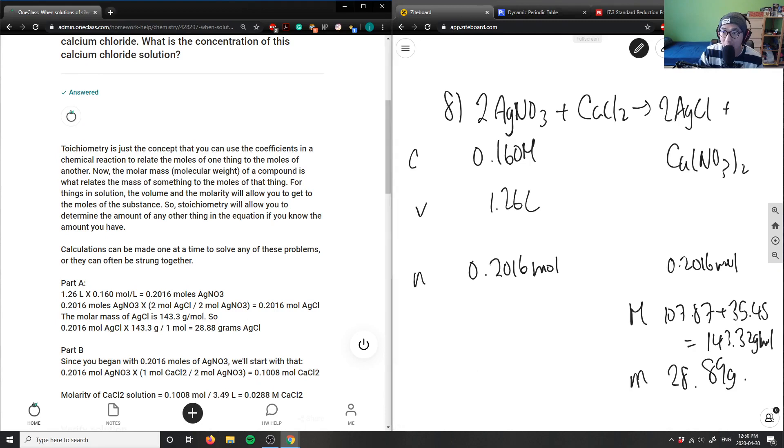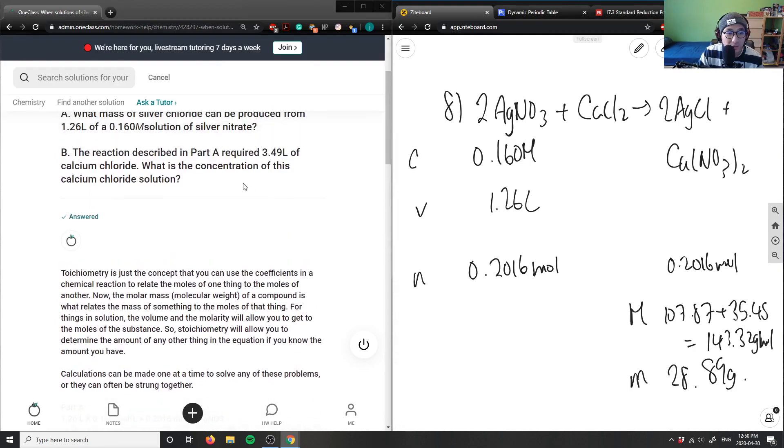And B here says the reaction described in part A required 3.49 liters of calcium chloride. What was the concentration of this calcium chloride solution? So they're now looking at calcium chloride here. So let me do this in blue and they required 3.49 liters here.